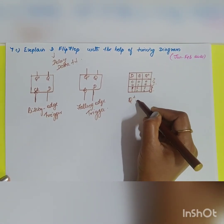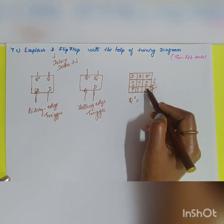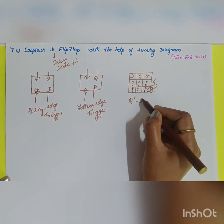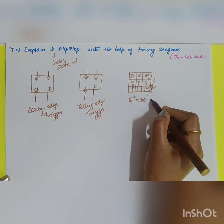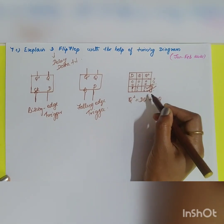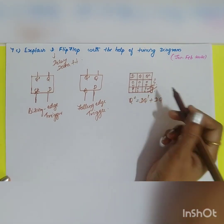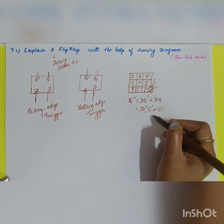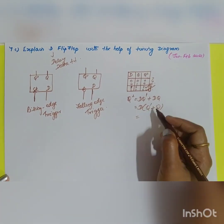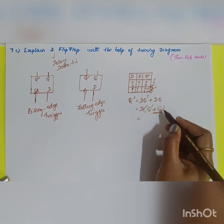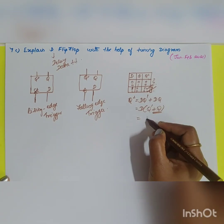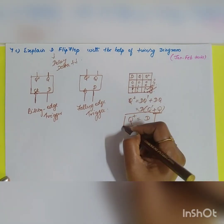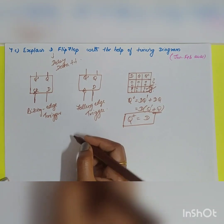Based on the characteristic table, the characteristic equation is derived: Q+ = D·Q' + D·Q. Taking D as common gives D·(Q' + Q), and since Q' + Q equals 1, the characteristic equation simplifies to Q+ = D. This means the next state is simply equal to D.